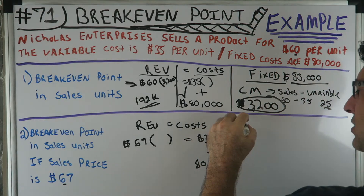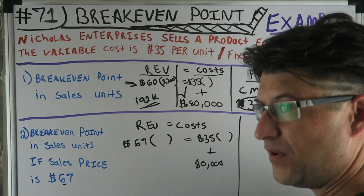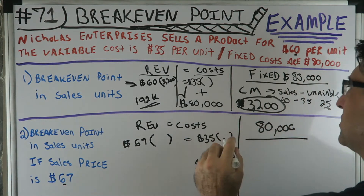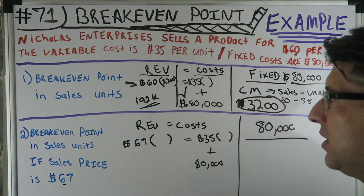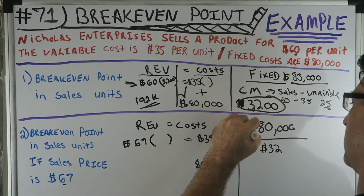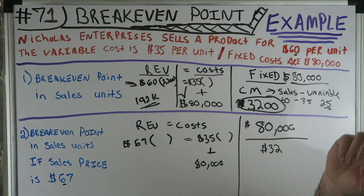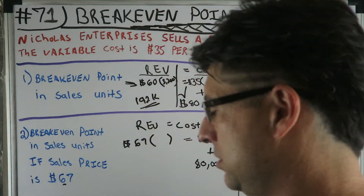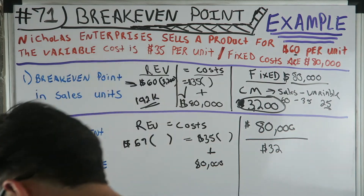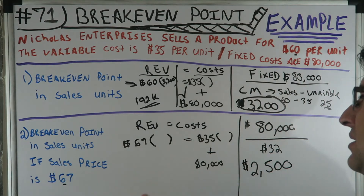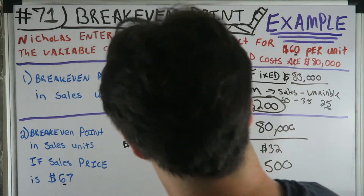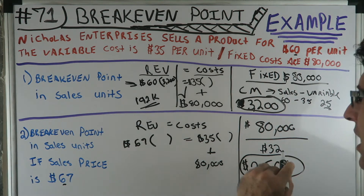Now let's solve with the formula: fixed over contribution margin. Fixed is $80,000. Contribution margin is $67 minus $35 equals $32. So $80,000 divided by $32 equals 2,500 units to break even. That makes sense — if you raise the price by $7 per unit, you're making more per unit, so you have to sell fewer units to cover your costs.